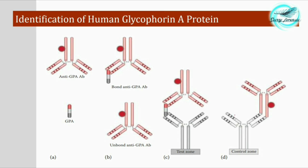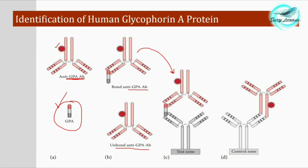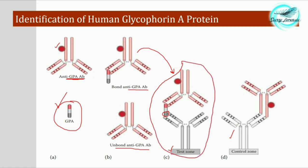Now let's understand its principle. The human anti-glycophorin A antibody, which is labeled, reacts with the glycophorin A antigen present in the sample to be detected as human blood. If this antigen is present, it will bind with the anti-glycophorin A antibody to form an antibody-antigen complex, while the unbound anti-GPA antibody remains free. This complex further binds to an immobilized antibody specific to another epitope of the GPA antigen at the test zone, imparting a color that confirms the sample is human blood.